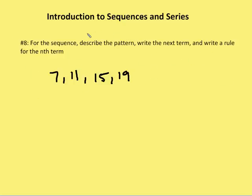In the next problem, we're given a sequence: seven, 11, 15, and 19. We're asked to describe the pattern, write the next term, and then write a rule for the nth term. Well, if I take a look at this particular sequence, I notice that it's an arithmetic sequence, which means that there's a common difference between each of the terms, and that common difference is going to be four.